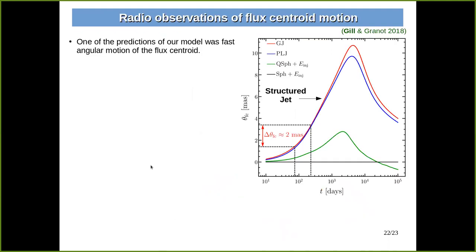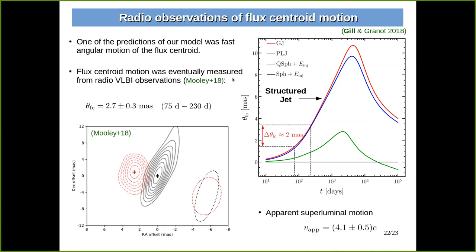When we were conducting this study using our semi-analytic modeling of GW170817, we made a prediction that if there is a structured jet, we ought to see a very fast motion of the flux centroid in radio. That prediction was confirmed using VLBI radio observations, which showed that the flux centroid motion was 2.7 milliarcseconds over the observation period — very close to what we had predicted — which is an indication of superluminal motion, where the apparent velocity of the jet on the plane of the sky is approximately four times the speed of light, a telltale signature of a relativistic jet.